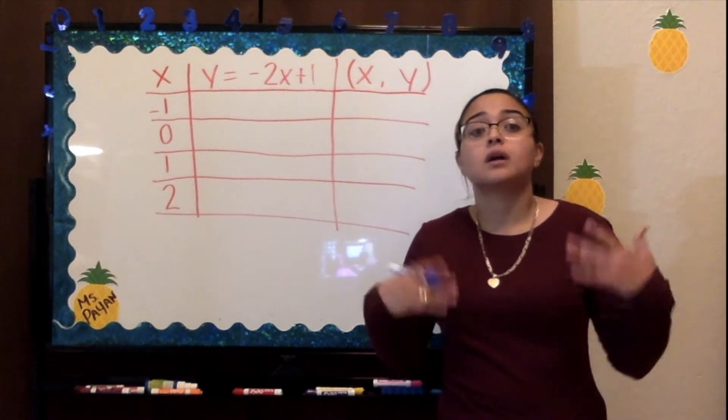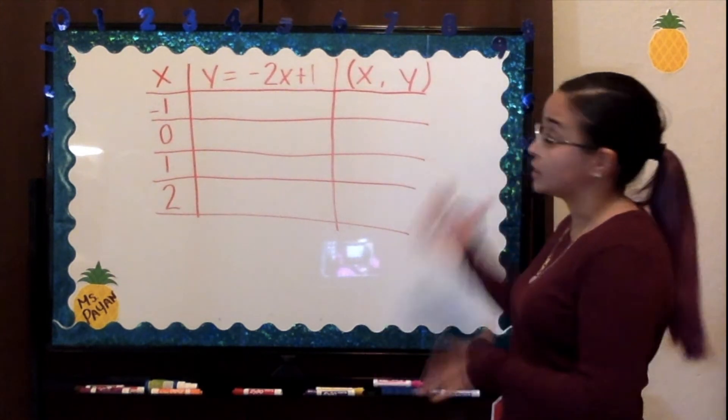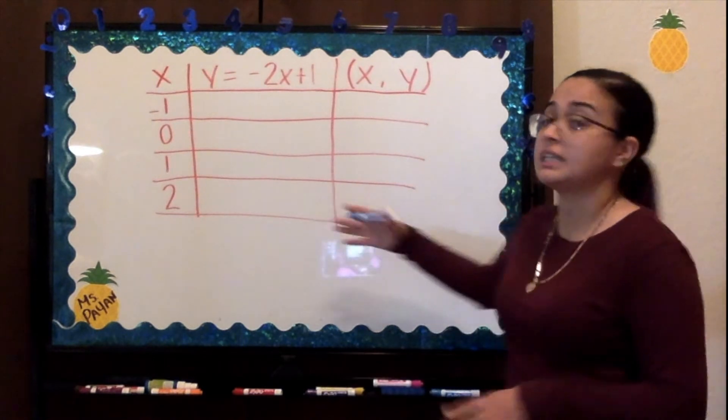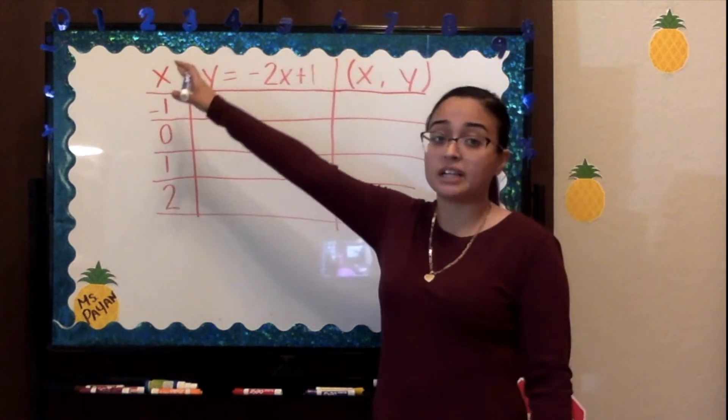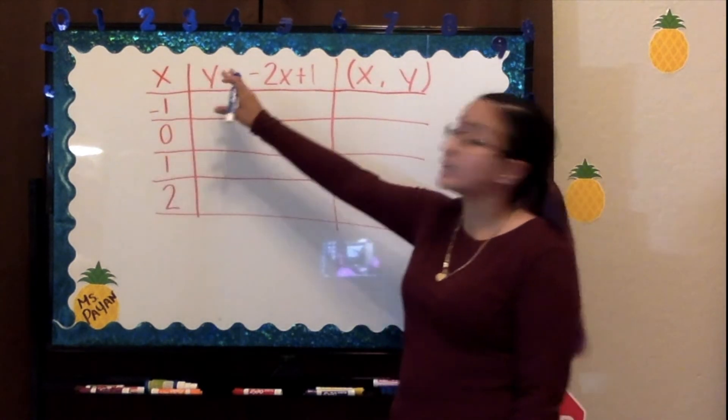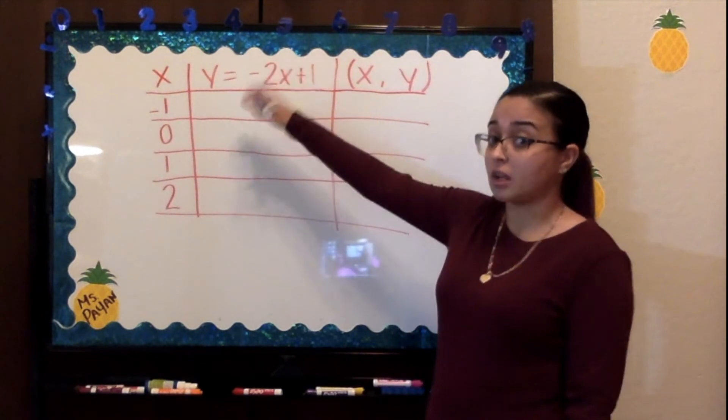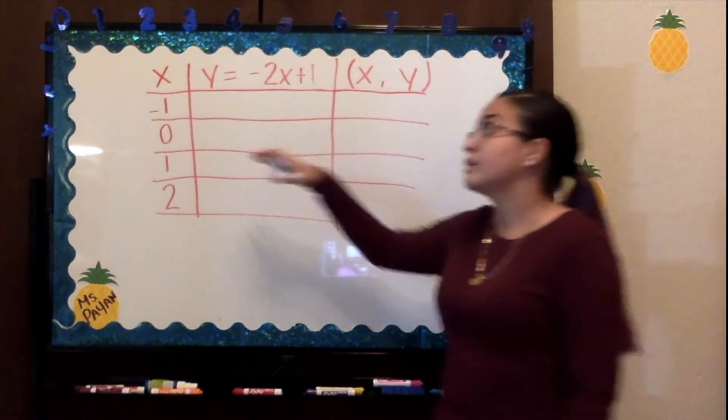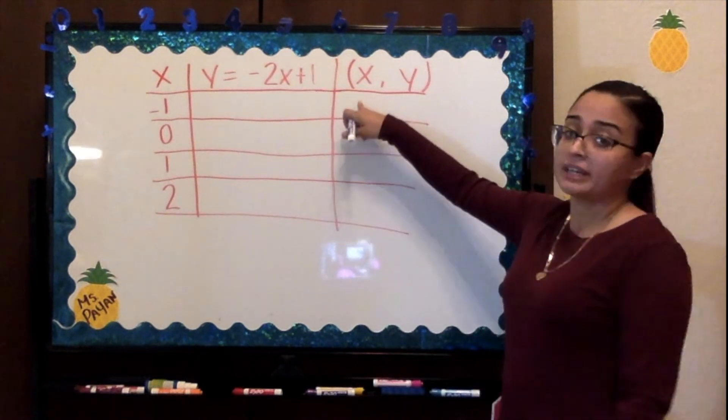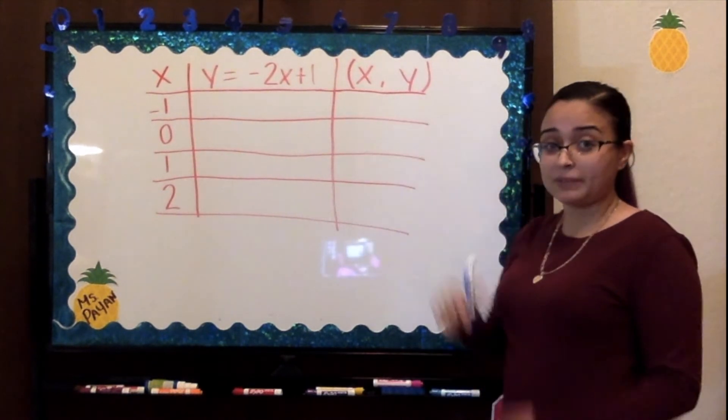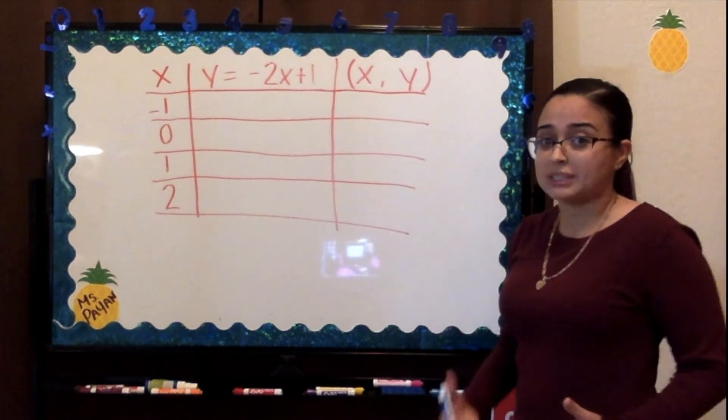When you get an equation like this, you're going to get values for x, you're going to get an equation for y so you can solve for y, and whatever you get for x and y, you're going to put them right here as coordinates. Let me walk you through it step by step.